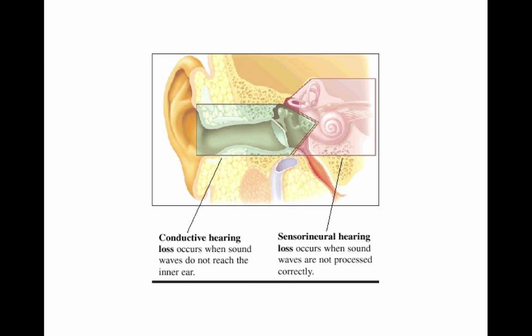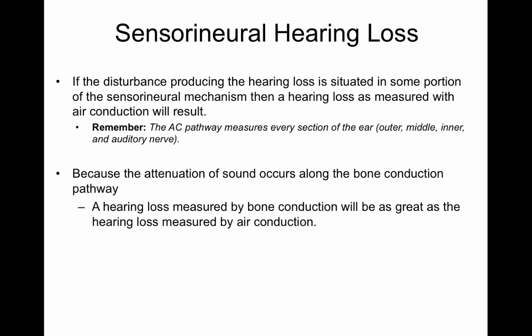The sensorineural hearing loss occurs when the sound waves are not processed correctly. Remember, the cochlea is the hearing organ. With sensorineural hearing loss, if the disturbance producing the hearing loss is situated in some portion of the sensorineural mechanism, then a hearing loss as measured by air conduction will result. You're also going to have abnormal air conduction scores because the air conduction pathway tests both the outer, middle, inner ear, and beyond. You're also going to have abnormal bone conduction scores because bone conduction tests the sensorineural mechanism, the cochlea.